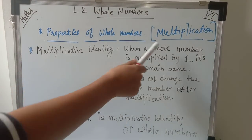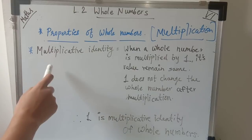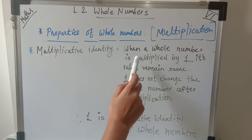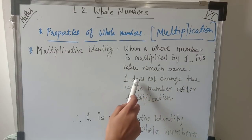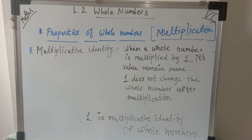Now a very important term related to the multiplication of whole numbers is multiplicative identity. Just as we saw additive identity for addition — where adding zero gives the same number — here the key number is one. When a whole number is multiplied by one, its value remains the same. Therefore, one is the multiplicative identity of whole numbers.